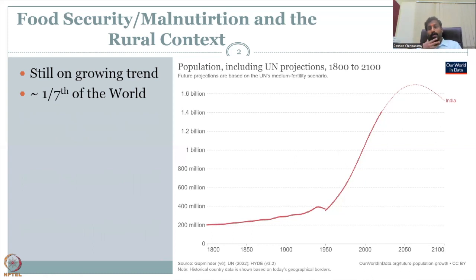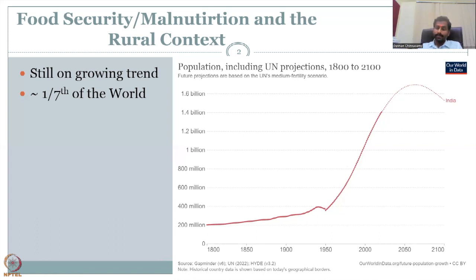India is approximately one seventh of the world's population, and 70% of that population lives in rural areas. For all 1.4 billion people in India, food mostly comes from within the country — we do import some food produce, but not that much. The major staples — rice, wheat, pulses, cereals, oil — all come from local entities.